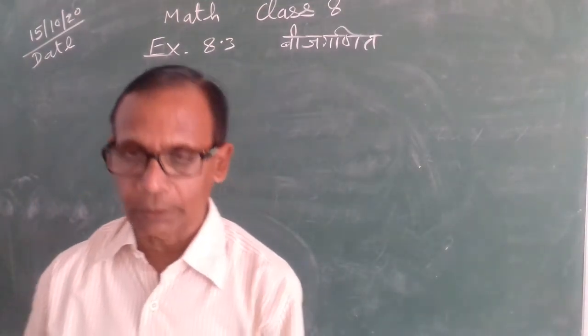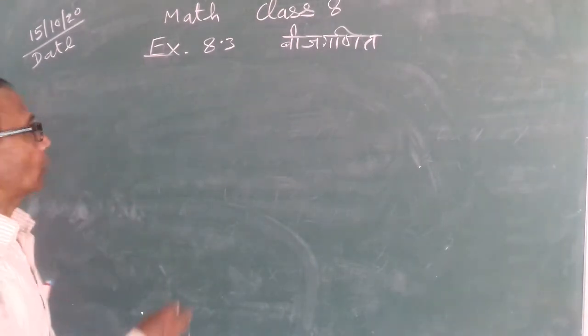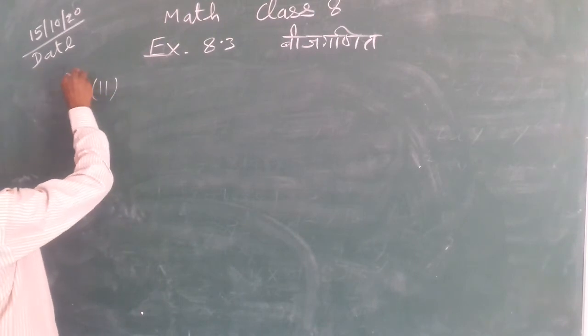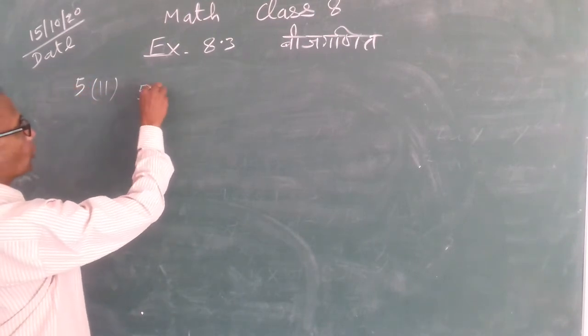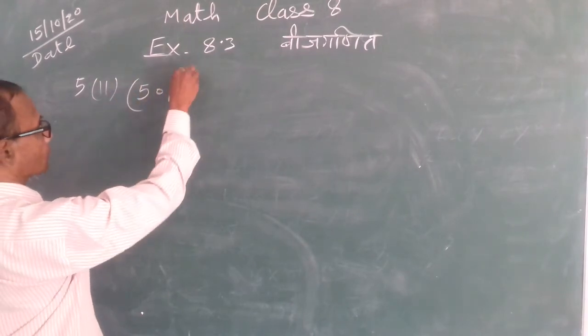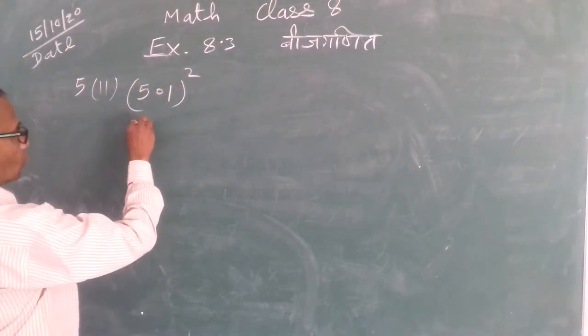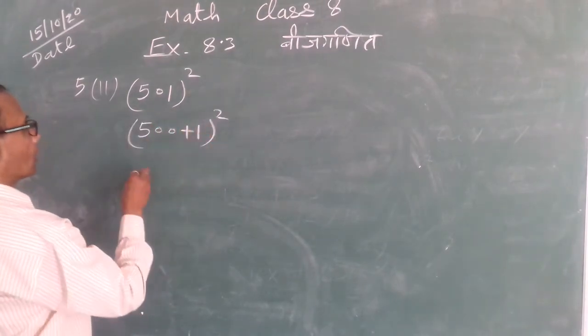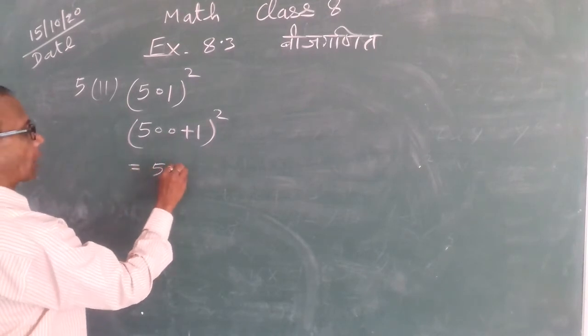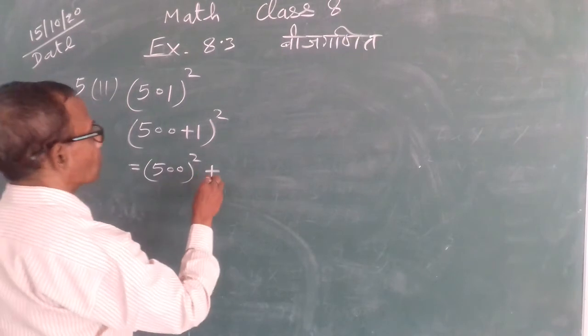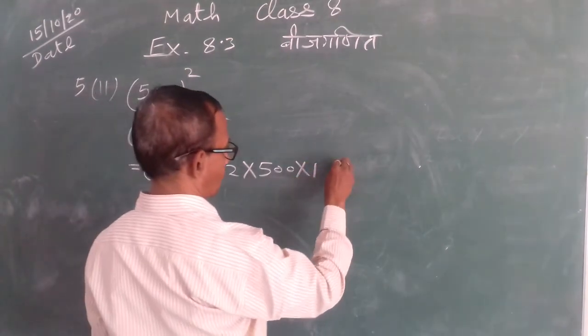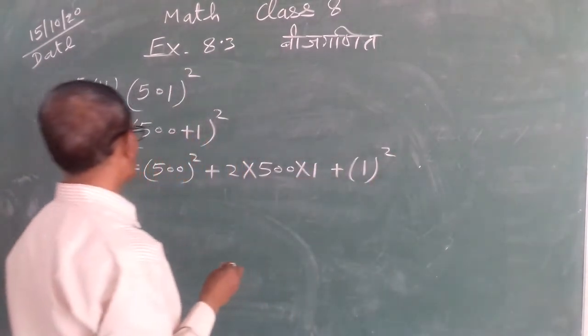Next: 501². This is (500 + 1)², which is a + b whole square. Using the formula a² + 2ab + b², we get 500² + 2 × 500 × 1 + 1².